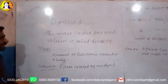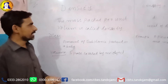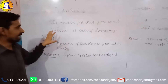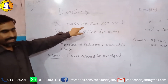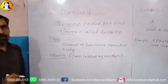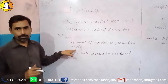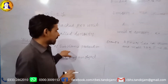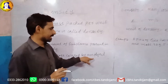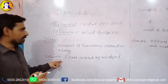So what is density? The mass packed per unit volume is called density. Mass means the amount of substance present in a body, and volume means the space covered by an object.